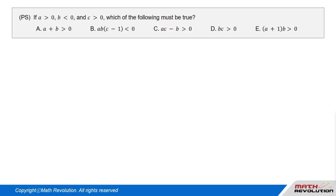If A is greater than 0, and B is less than 0, and C is greater than 0, which of the following must be true?